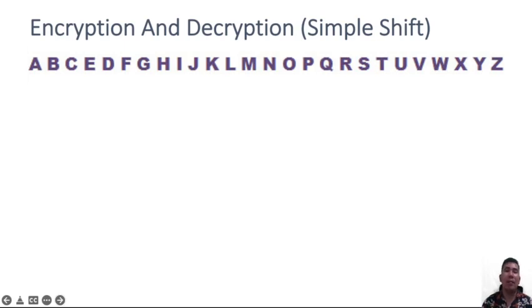For example, using the English alphabet that is projected on your screen, let's say we have a word: apple. And then let's say we have a key, which is four.